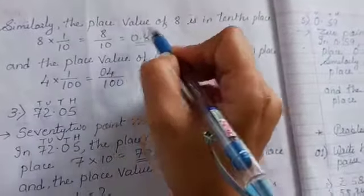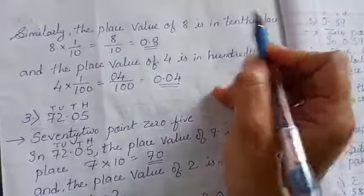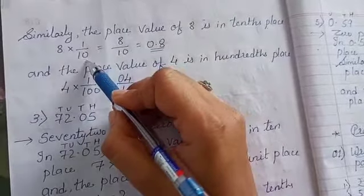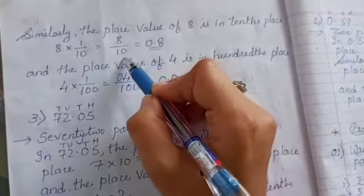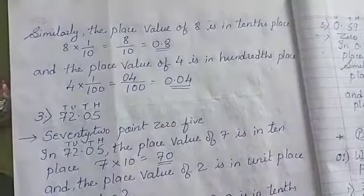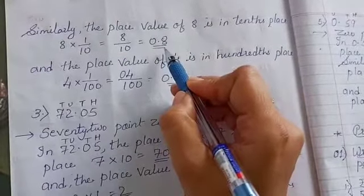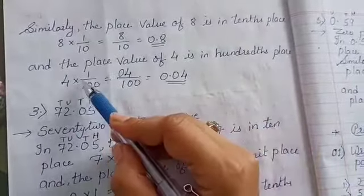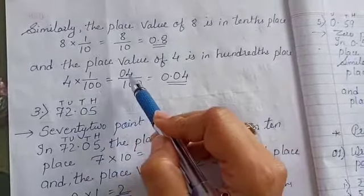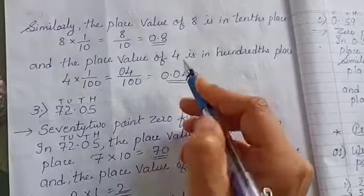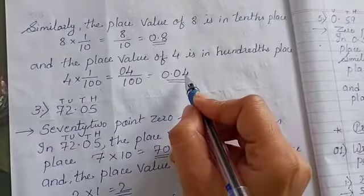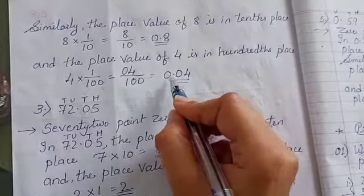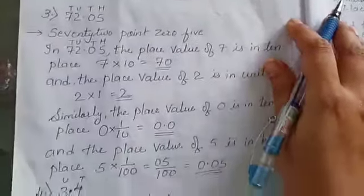The place value of 8 is in the tenth place. So 8 multiplied by 1 upon 10. When the word 'tenth' comes, you have to write 1 upon 10. So 8 upon 10 — after 1 number, we will put a decimal, so 0.8 will be the answer. And the place value of 4 is in the hundredth place. So 4 multiplied by 1 upon 100, giving 0.04 — after 2 numbers, you put a decimal. So 0.04 is the answer.